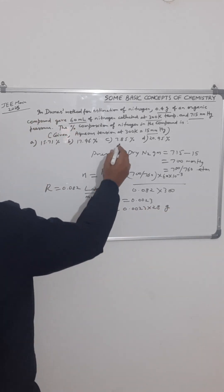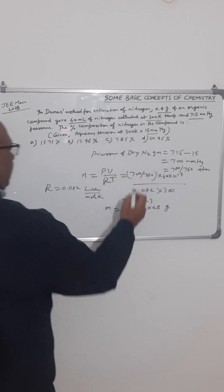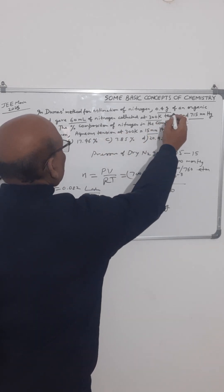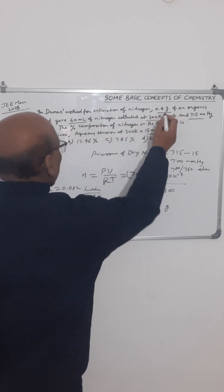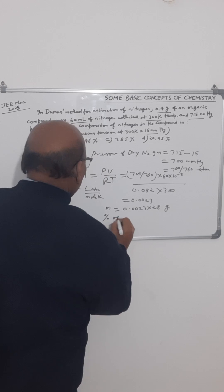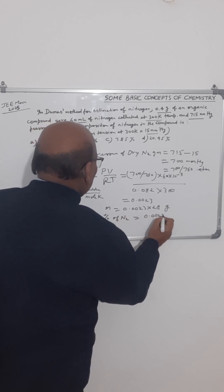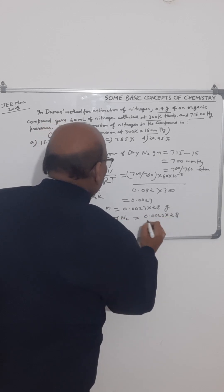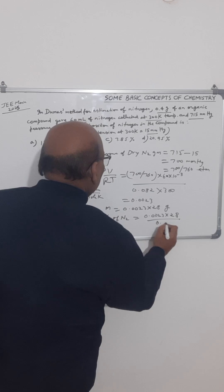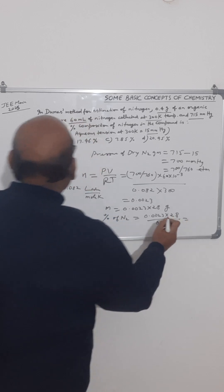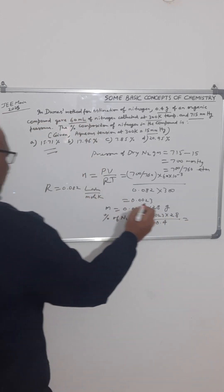Now we have to find the percentage of nitrogen. So we divide it by the mass of the organic compound, which is 0.4 grams. The percentage of nitrogen in the organic compound is 0.0023 multiplied by 28 divided by 0.4.